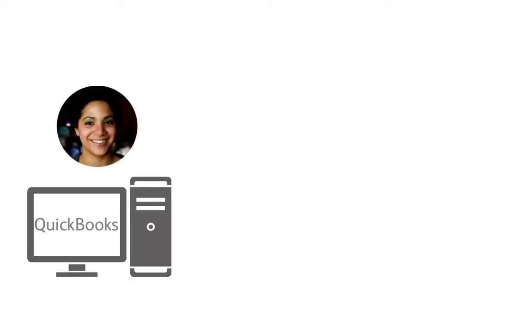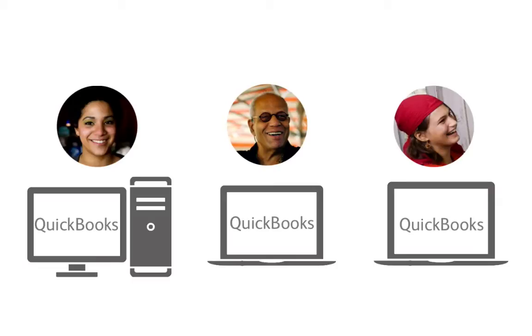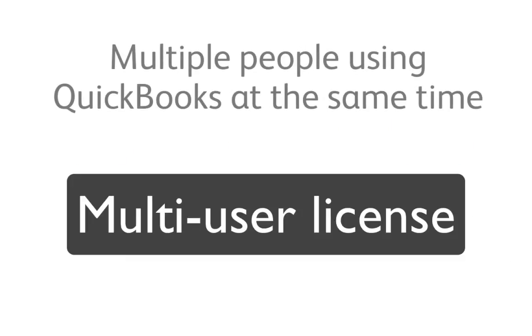Now here's Jean. She owns a coffee shop. Jean has several people in her business using QuickBooks at the same time. There's her dad who's her business partner and helps with the books, and her store manager who enters bills and orders supplies sometimes. So Jean has multiple people using QuickBooks at the same time, so she has a multi-user license.